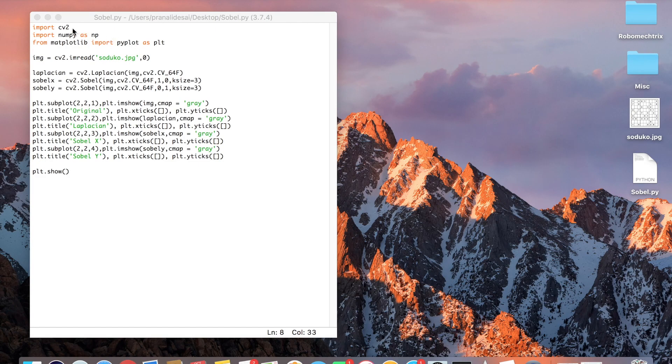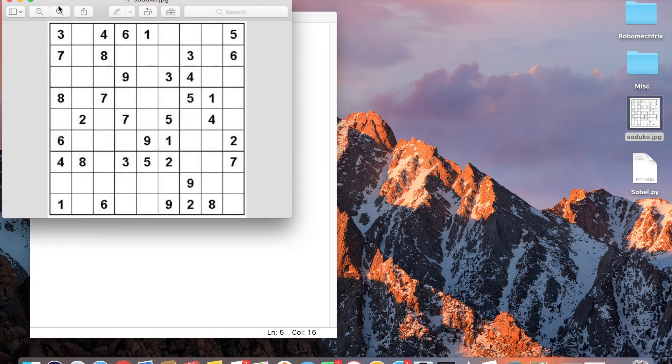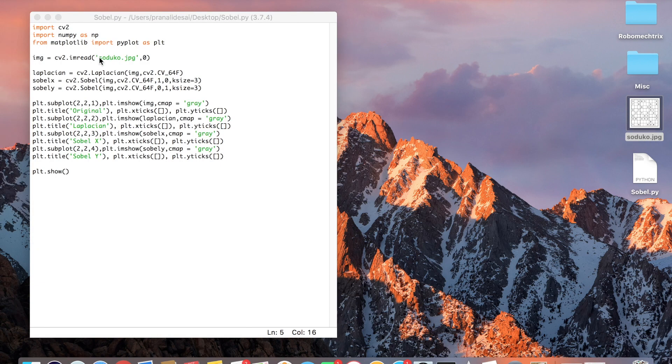So enough of theory. Now let's jump onto the code for Sobel operator. Importing CV2 and importing NumPy as NP are the same previous steps. We'll use a plotting library called matplotlib to showcase the plots of the images of Sobel. So I'll read my image from this command, CV2.imread. I'm taking an image of a sudoku because it has horizontal and vertical lines.